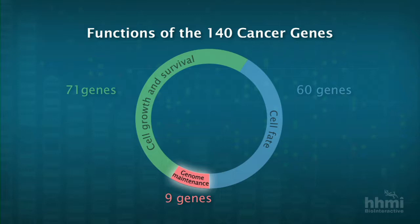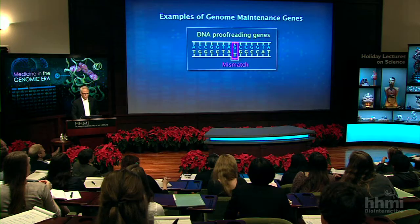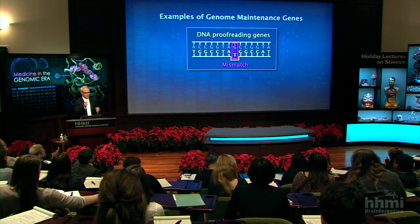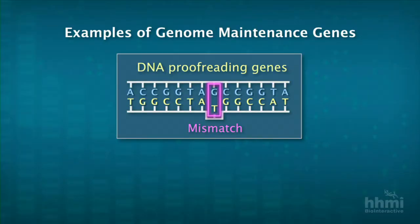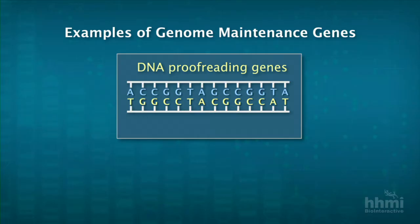What about the genome maintenance category? There are nine genes in that category. When DNA is replicated in a normal cell, DNA polymerase is a really good enzyme, but it's not perfect — mistakes are made about every billion bases. In order to correct the mistakes, we have proofreading enzymes which go back and read the new sequence and fix the errors. A proofreading enzyme cruises across the DNA, stops, recognizes a mistake, fixes it, and moves on to scan the rest of the DNA for other errors. This proofreading system is pretty good, but one in a billion bases can be mutated and gets missed.